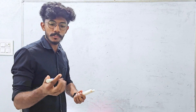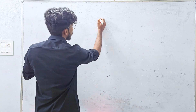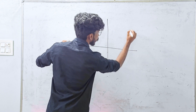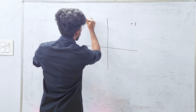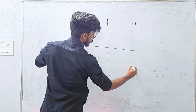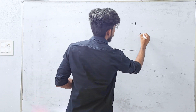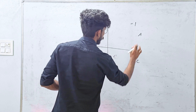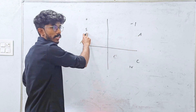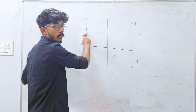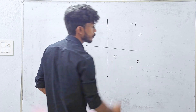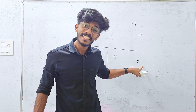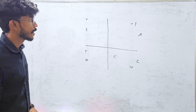Now, let's study the quadrants. We have 4 quadrants: 1st, 2nd, 3rd, and 4th. We have to study the lesson using the mnemonic 'Add Sugar To Coffee.' A — All positive; S — Sin, Cos; T — Tan, Cos; C — Cos, Sec. I have already covered this in a previous video.